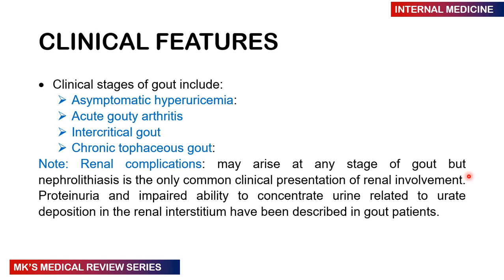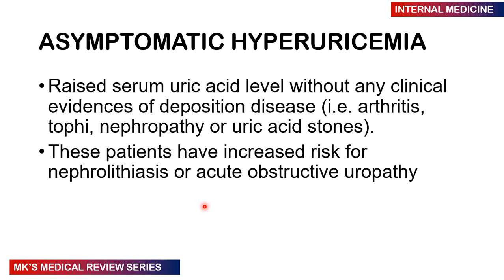Clinical features depend on the stage, of which there are four: asymptomatic hyperuricemia, acute gouty arthritis, intercritical gout, and chronic tophaceous gout. Renal complications can happen at any stage — nephrolithiasis (uric acid kidney stones) is a common renal presentation. Proteinuria and impaired ability to concentrate urine may be associated with crystal deposition in the renal interstitium. In the asymptomatic stage, patients have a raised uric acid level but no symptoms or clinical evidence of crystal deposition such as arthritis, tophi, nephropathy, or uric acid stones, though they have increased risk for nephrolithiasis.